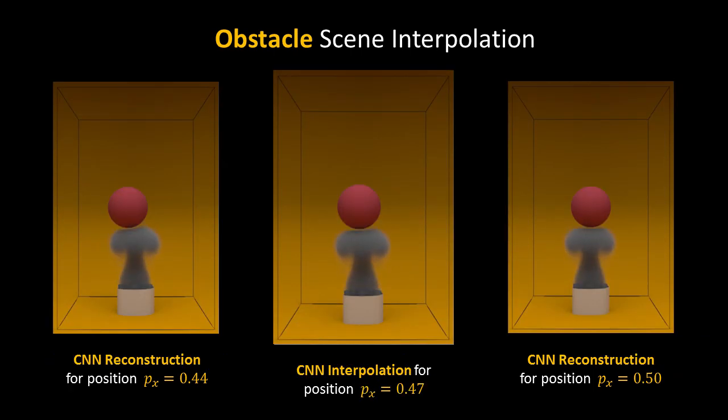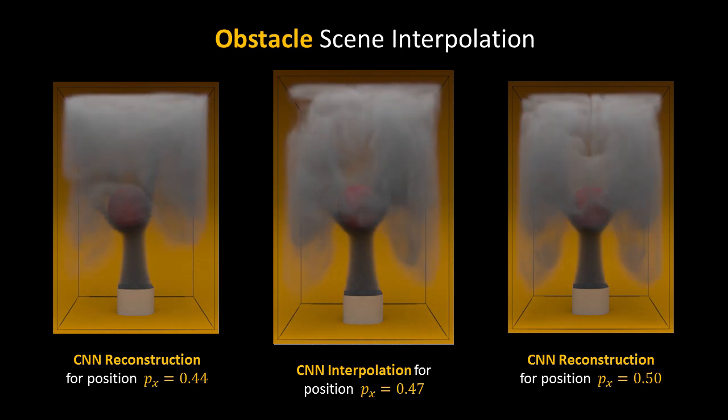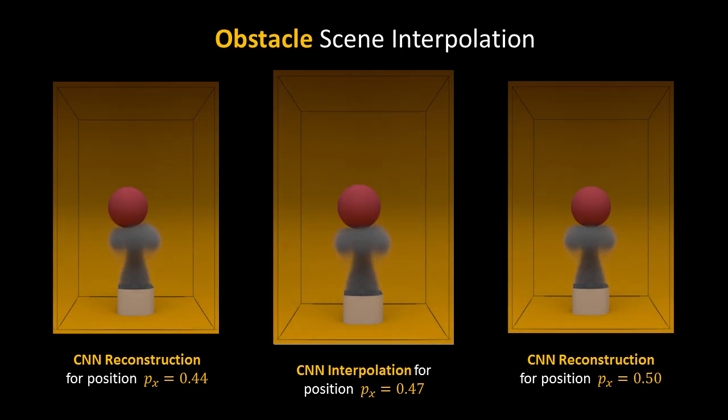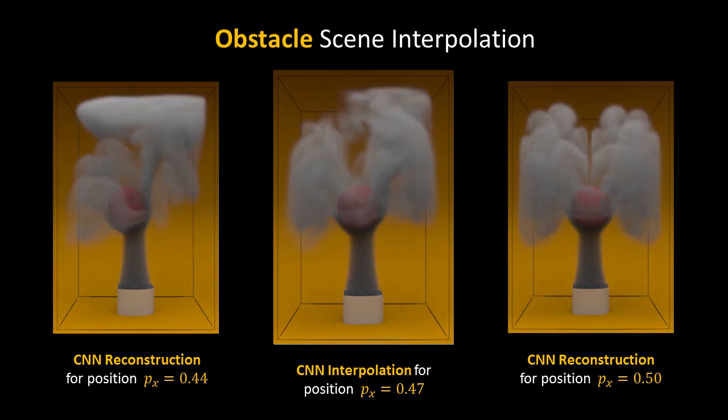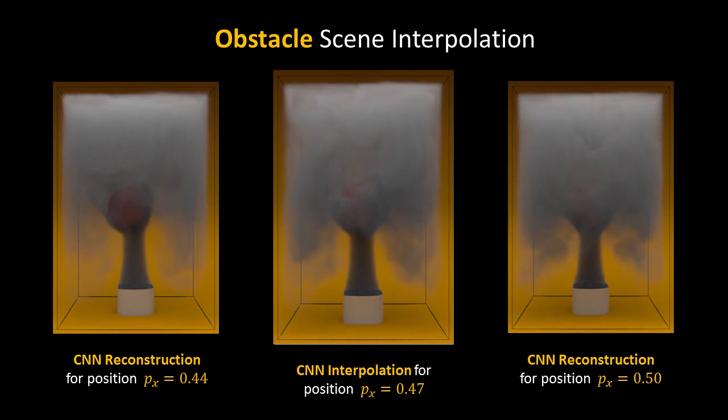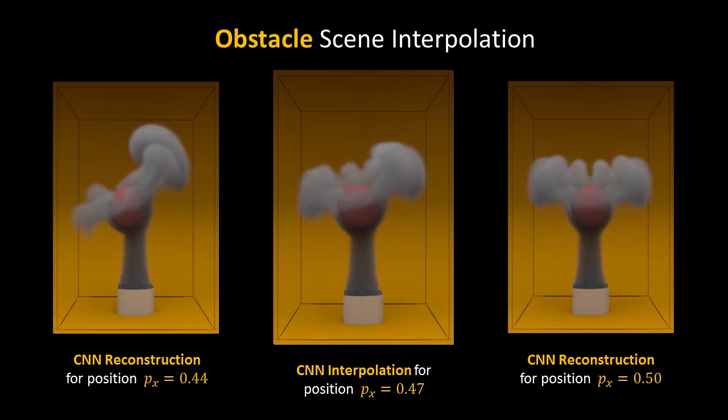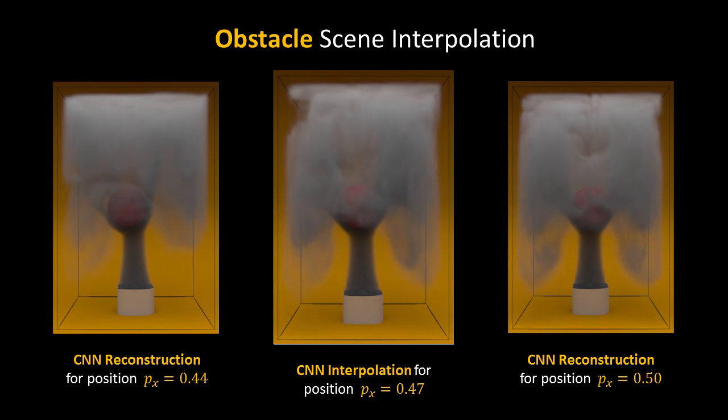In this challenging scenario, we interpolate between two different rising plumes hitting an obstacle. Although the velocity fields become different in left and right scenes through the end of the video, our approach is still able to yield plausible results.